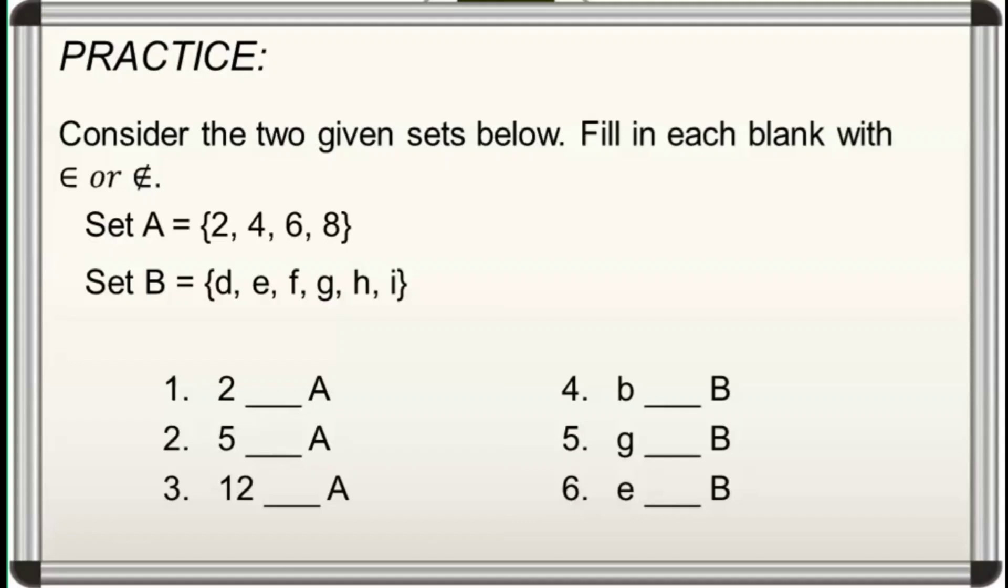Dahil alam na natin ang mga elements ng dalawang sets, we are now ready to answer. For number 1, 2 is an element of set A. Number 2, 5 is not an element of set A. Number 3, 12 is not an element of set A.